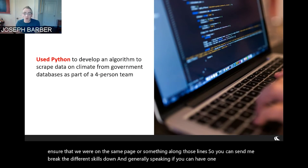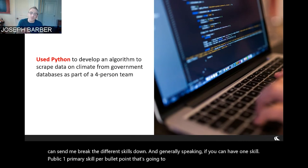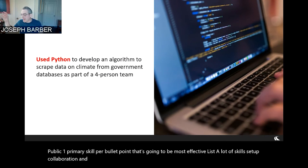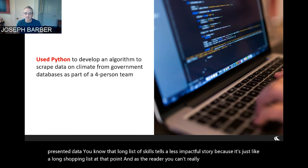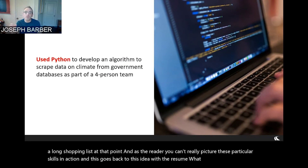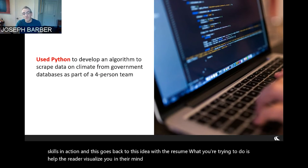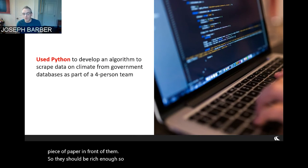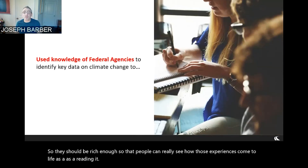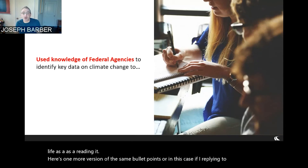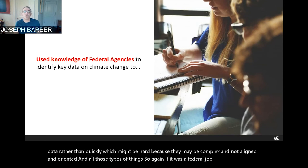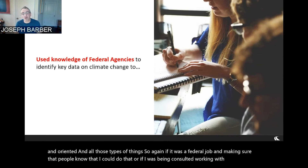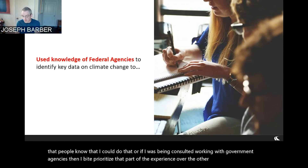Generally, one primary skill per bullet point is most effective. If you list a lot of skills — collaboration, developed algorithm, good communications, presented data — that long list tells a less impactful story because it becomes a shopping list and the reader can't really picture those skills in action. With a resume, what you're trying to do is help the reader visualize you in their mind. The words should be rich enough so that people can really see how those experiences come to life. If I were applying to a government agency, I might prioritize my knowledge of federal databases and my ability to get data out of them quickly — or have a separate bullet point showcasing that experience.